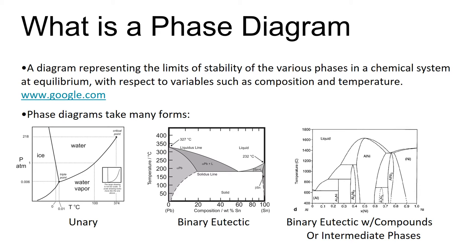The first one is unary, the second one is binary eutectic, and the third one is binary eutectic with compounds or intermediate phases. In this presentation, we're going to focus on the binary eutectic phase diagram.